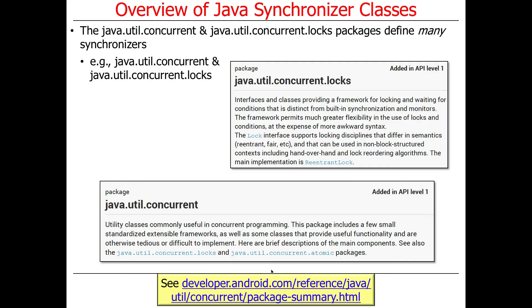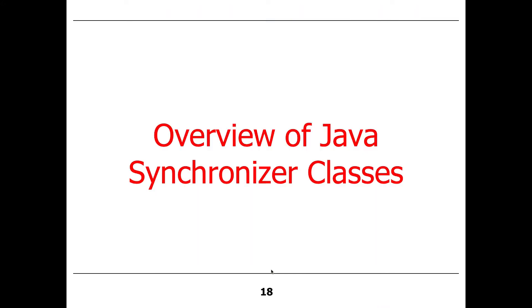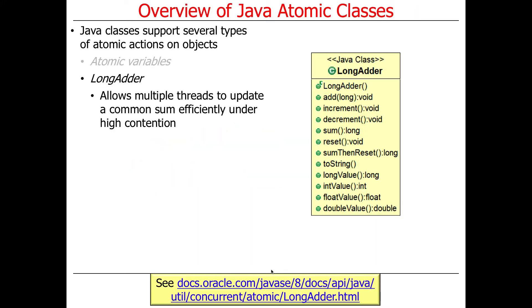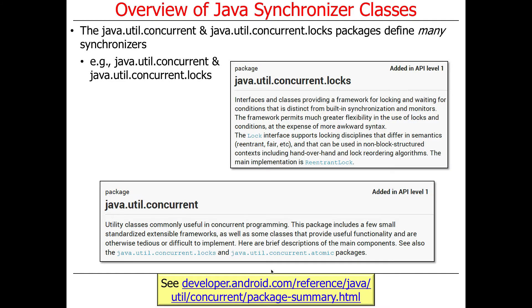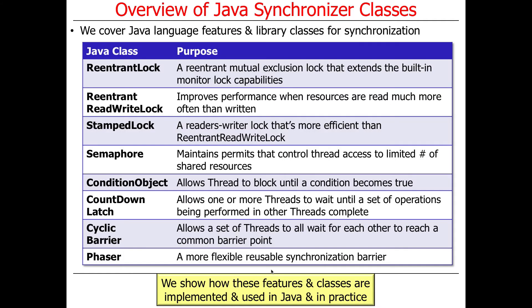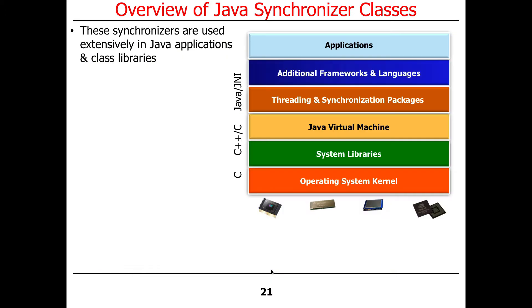There's also a pile of synchronizer classes. These are all part of the java.util.concurrent.locks package, and there's also a bunch of stuff in java.util.concurrent. The atomic stuff we talked about is in java.util.concurrent.atomic. Here are the classes — I'm going to talk about these briefly, and then we're going to go look at them in more detail, starting with semaphore. I'll give you lots of examples when we get into the details.